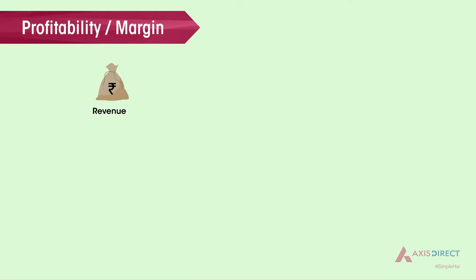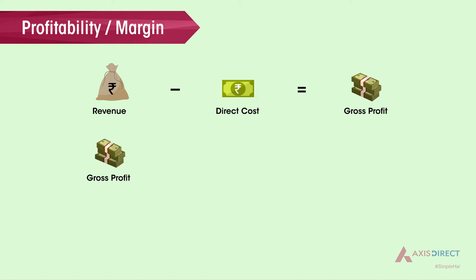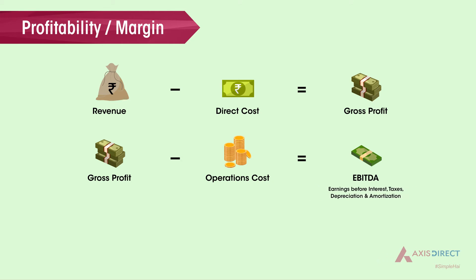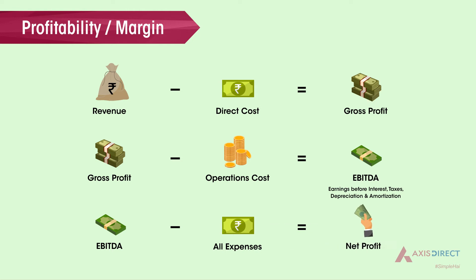Revenue from sales less direct cost to manufacture the product equals gross profit. Gross profit less operating cost — or cost incurred to perform day-to-day activities — equals EBITDA, or earnings before interest, taxes, depreciation and amortization. EBITDA less all expenses including depreciation and amortization, interest, and taxes equals net profit.